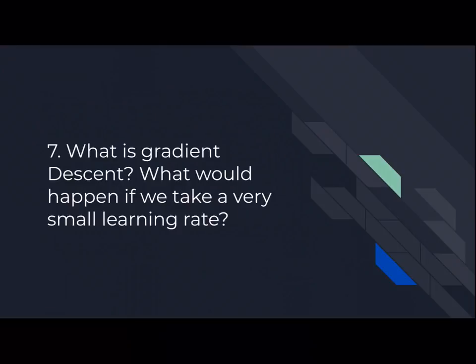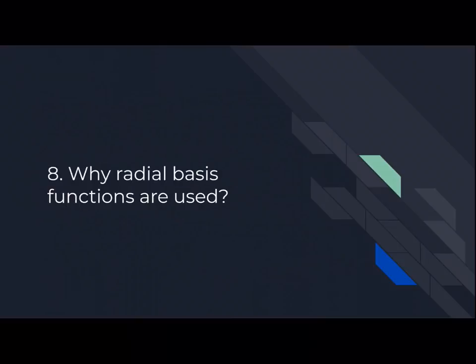Next, they might ask you what gradient descent is. You have to explain that based on the parameters you want to see how the error behaves, and what would happen if we take a very small learning rate — if we take a very small learning rate, it might take a longer time to converge or reach the minimum value.